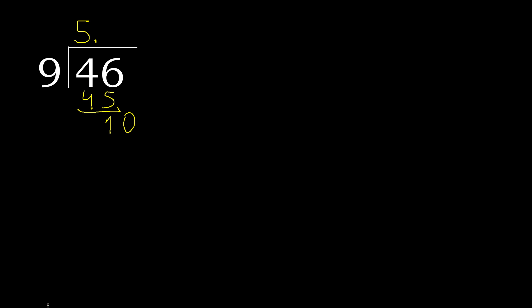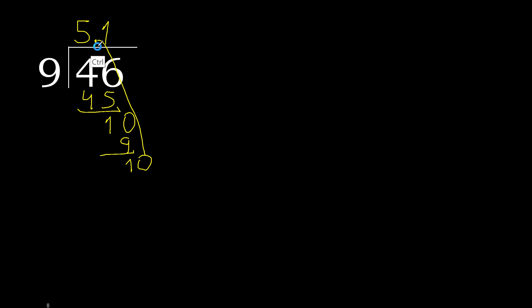9 multiplied by 2 is greater. So multiplied by 1 is 9. Subtract, complete. Place the point here. Bring down: 10.